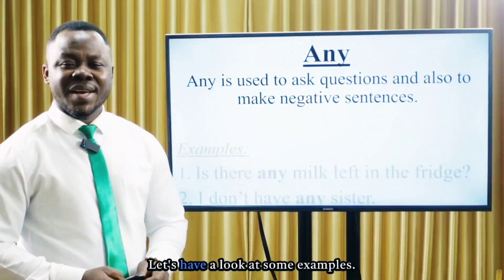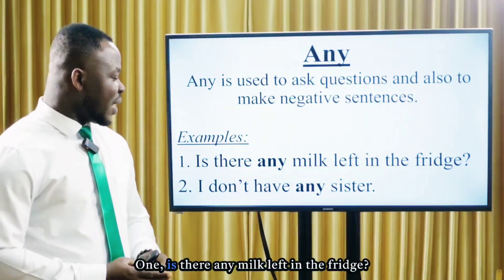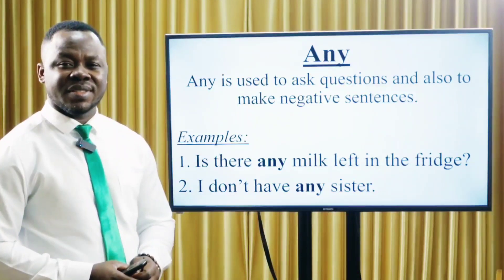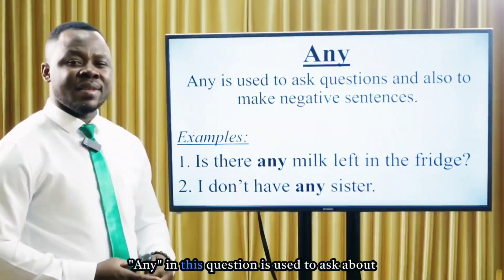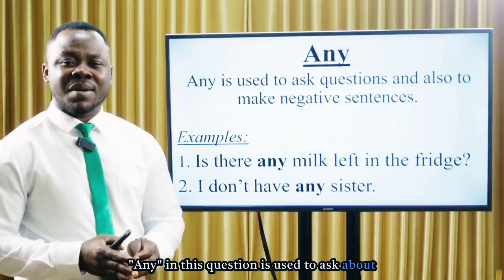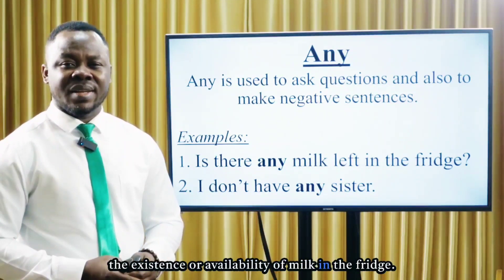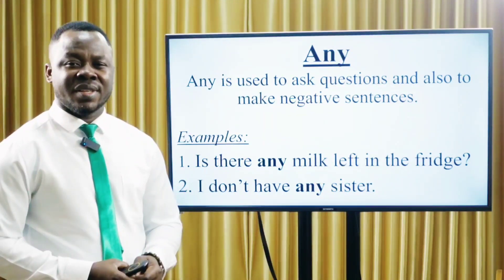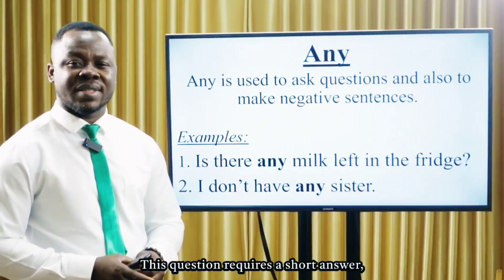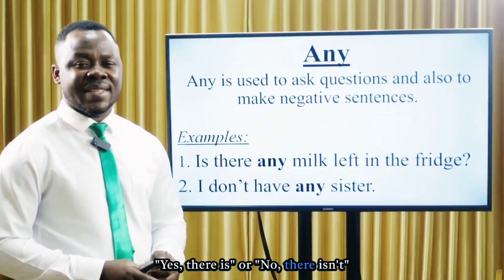Let's have a look at some examples. One: Is there any milk left in the fridge? 'Any' in this question is used to ask about the existence or availability of milk in the fridge. This question requires a short answer: yes, there is, or no, there isn't.